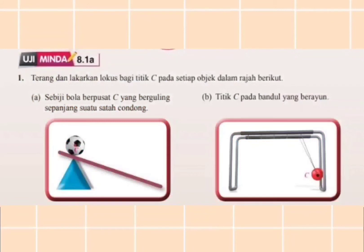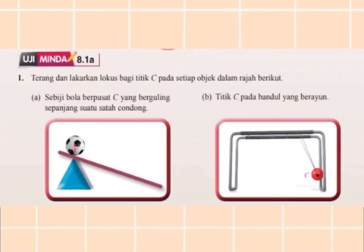Kita bergerak kepada Uji Minda 8.1a soalan 1: Terang dan lakarkan Locus bagi titik C pada setiap objek dalam rajah berikut. Soalan A: Sebiji bola berpusat C yang berguling sepanjang satu lantai. Maka, bola yang berguling itu akan menghasilkan Locus yang membentuk garis lurus.